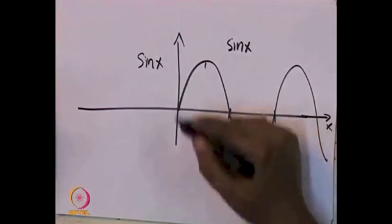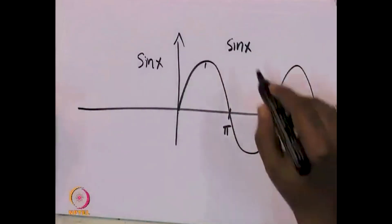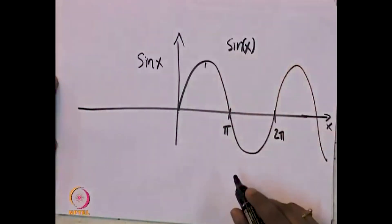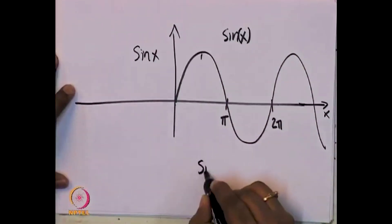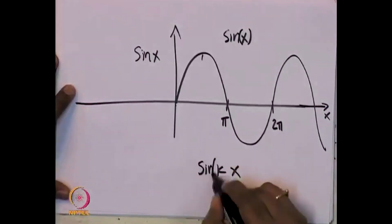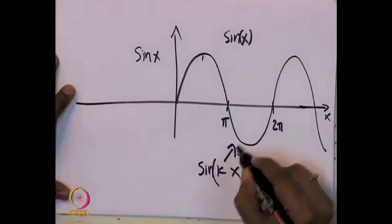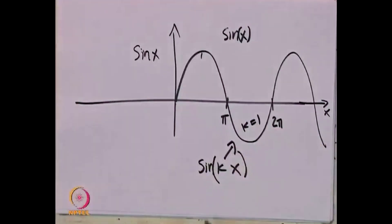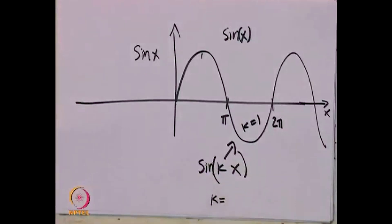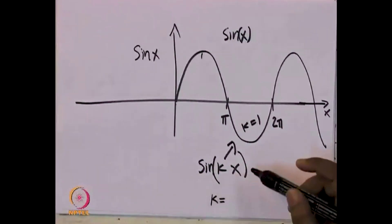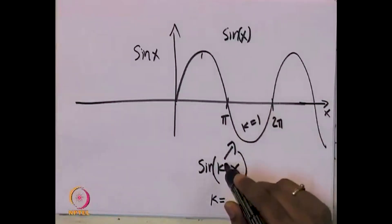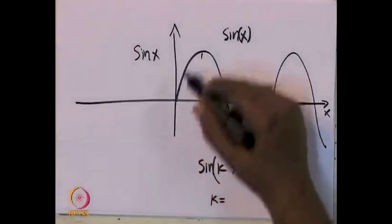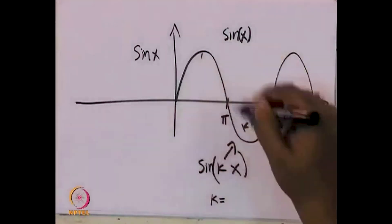Either you can draw this, or you just tell somebody that it is a sine wave with frequency 1. We can define in general sine kx. Here k is 1, because this is just sine x. So you can just specify k: if you specify k, you get a different wave. If k is 1, you have sine x; if k is 2, something else; if k is 3.5, some other kind of wave. Just by specifying k, everybody will immediately understand the shape.